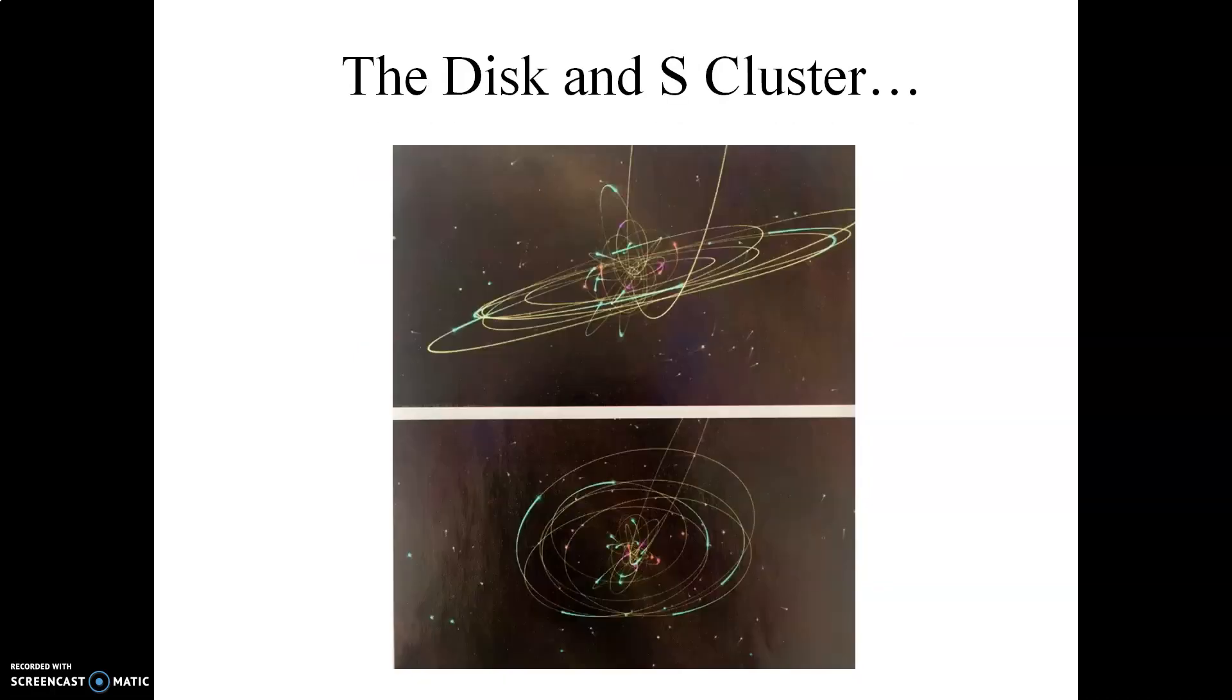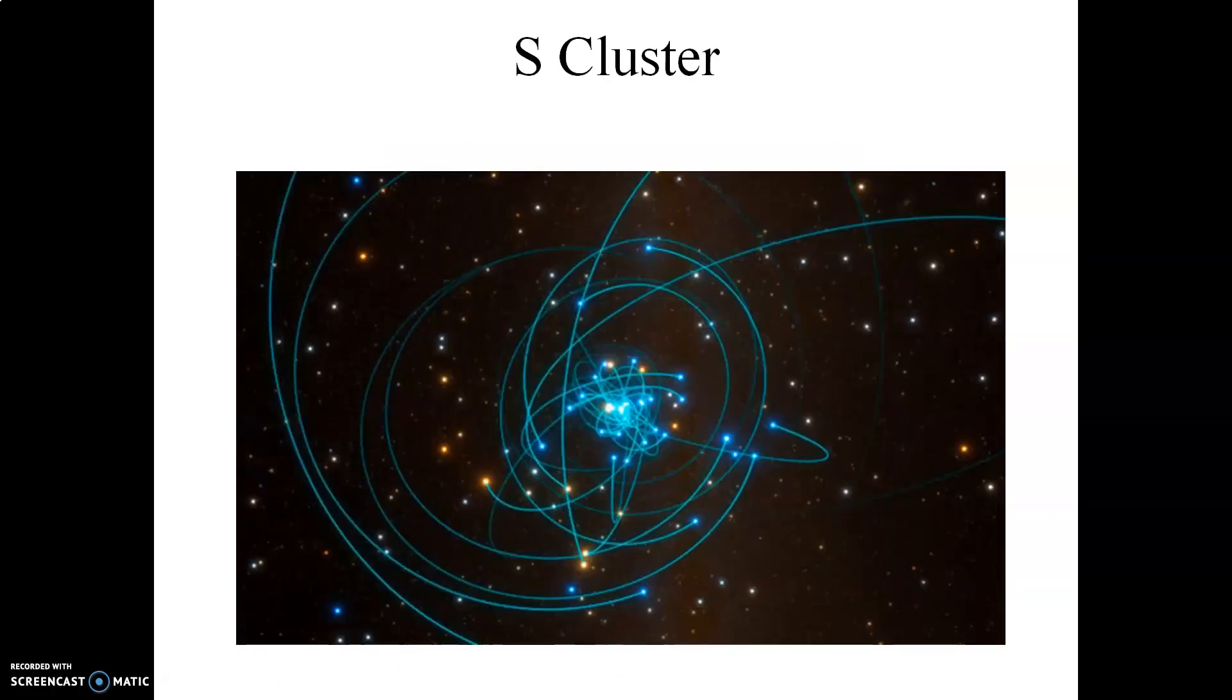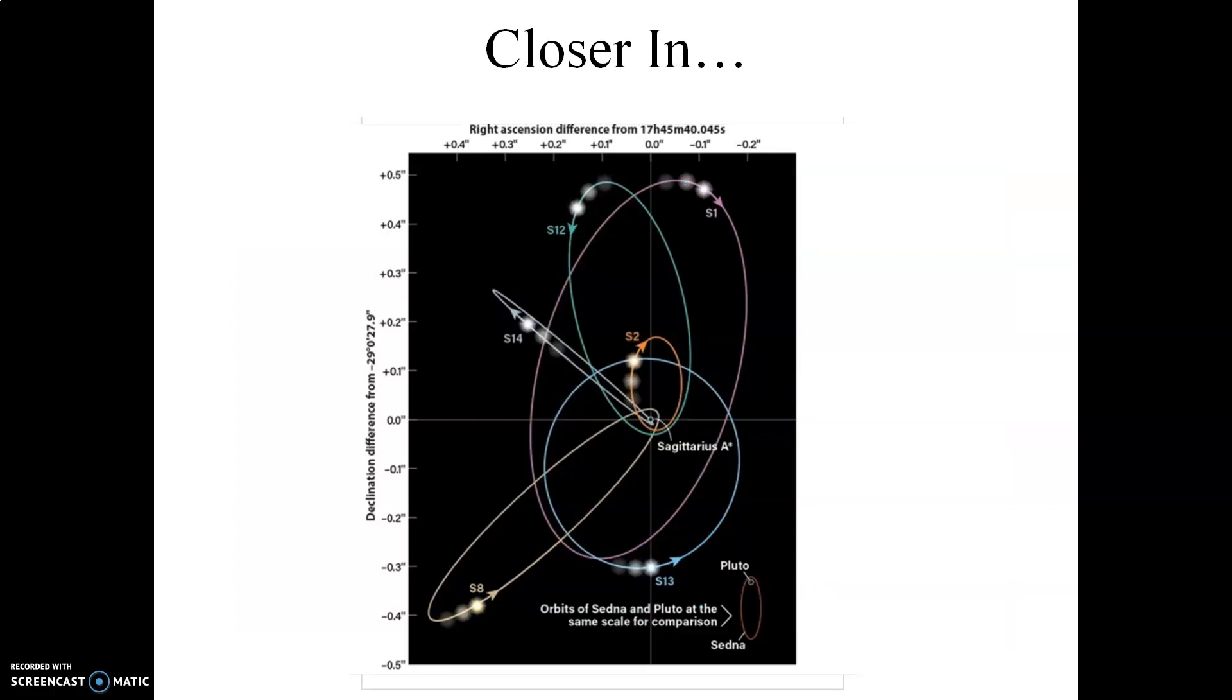This slide depicts the motions of the stars within that disk and within the cluster referred to as the S cluster, really close to the black hole itself. Within the S cluster, each one of the stars that you see here are tracing out elliptical orbits around the black hole. The focus of each one of these ellipses is the same: Sagittarius A star. No visible light is coming from this focus; however, this is where all the X-rays are coming from. This is primarily why we know the black hole is there, because of its enormous gravitational influence upon stars in the S cluster that are very close to the black hole.